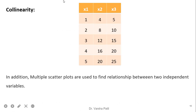As an example of collinearity: if x₁ = 1, 2, 3, 4, 5, and x₂ is simply 4 times x₁ and x₃ is 5 times x₁, then there is a straightforward linear relationship between x₁ and x₂, and x₁ and x₃. Collinearity exists here. We can also check multiple scatter plots to find relationships between independent variables. Such conditions should be avoided in multiple linear regression.